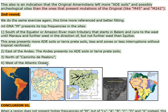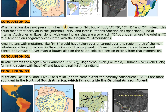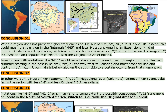3. North of Caminho de Piburu. 4. West of the Atlantic Ocean. Conclusion 01: When a region does not present higher frequencies of M, but of LX, A, B, C, D and X instead, this could mean that early on in the internal M45 and later mutations — Amerindian expansions, kind of internal Austronesian expansions — with Amerindians that are also or still Q, but not anymore the original Q, M3 Amerindian, negatively correlated with the original M3 Amerindian.